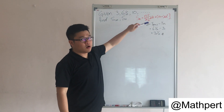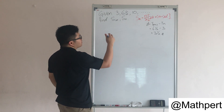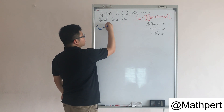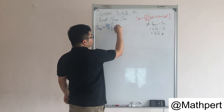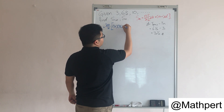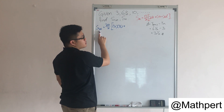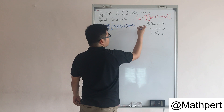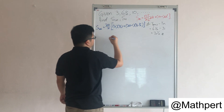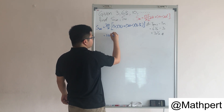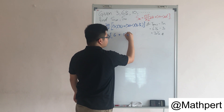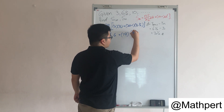We substitute all the information into the equation. For S20, n is 20, so 20 over 2, multiplied by 2 times 3, plus n minus 1 — that is 20 minus 1 — which is 19, multiplied by 7 over 2. So 20 over 2 is 10, 2 multiplied by 3 is 6, plus 19 multiplied by 7 over 2, which becomes 133 over 2.